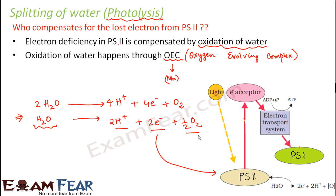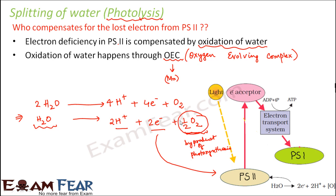The electrons produced are sent to PS2 to compensate for the lost electron. The oxygen produced is a byproduct of photosynthesis — it is the oxygen released in the overall photosynthetic reaction. The hydrogen ions or protons are released into the thylakoid space.